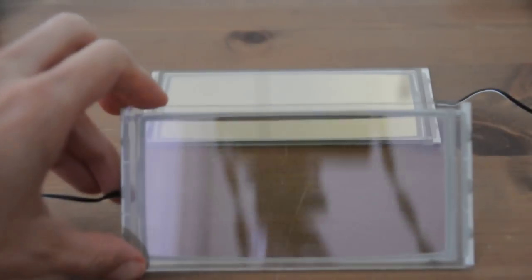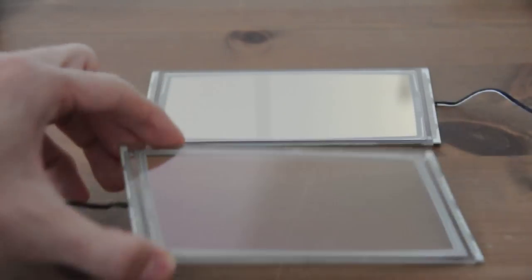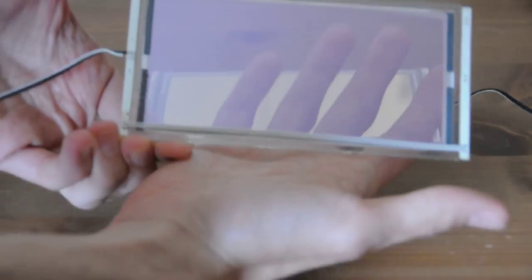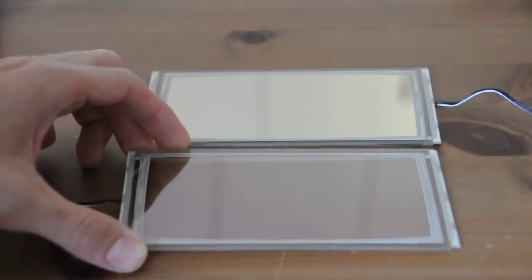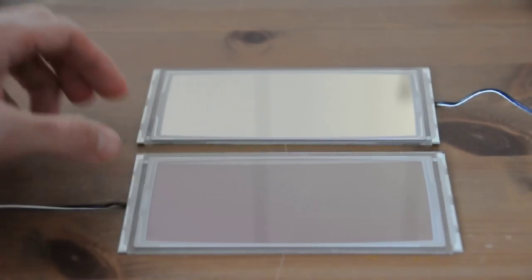The first is a transparent panel. As you can see now that it's turned off, it's just like normal glass. It's a bit dark. It offers 40% transmittance. It's really nice.